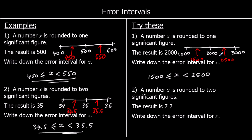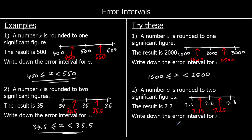The second one has been rounded to two significant figures and we've got 7.2. The next one up is 7.3, the one back is 7.1, so to round to 7.2 it must be between the two halfway points: 7.15 and 7.25. The error interval is x is bigger than or equal to 7.15 and less than 7.25.